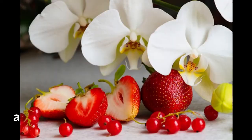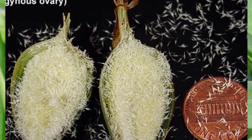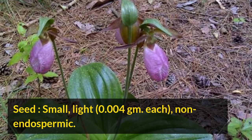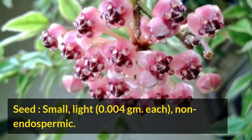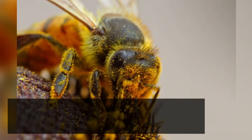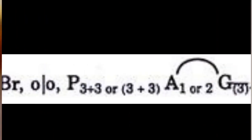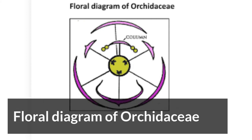In Cypripedium and Paphiopedilum, all three stigmas are functional. Fruit: a capsule. Seed: small, light — 0.004 grams — non-endospermic. Pollination: entomophilous. Floral formula and floral diagram of Orchidaceae.